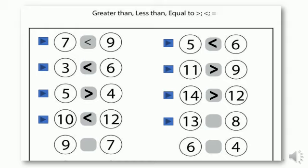Next we have number thirteen on the left side and eight on the right side. Come on, which number is bigger? Excellent — for those who said thirteen, thirteen is bigger, so draw the alligator's mouth open towards number thirteen. Next we have nine on the left side and seven on the right side — draw the alligator's mouth open towards number nine. Next, six on the left side and four on the right side — six is bigger than four, so draw the alligator's mouth open towards six. Don't forget kids, the alligator always likes to eat the bigger number!